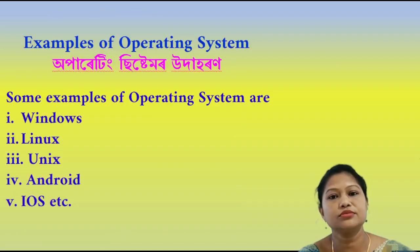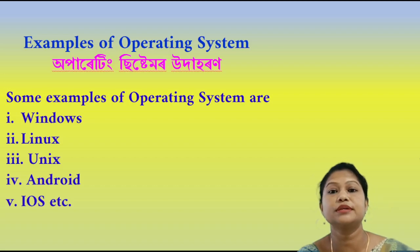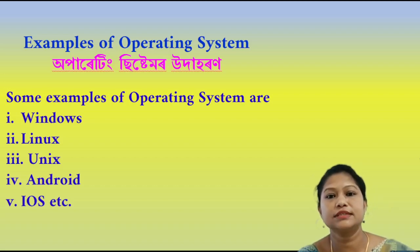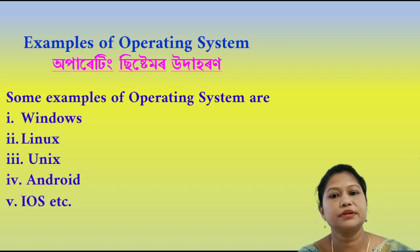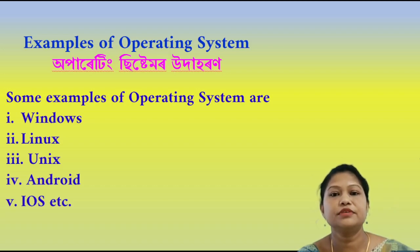Examples of operating systems include MS-DOS, which is a black and white screen, and Windows operating systems such as Windows 95, 98, Windows XP, Vista, Windows 7, 8, 10, and 11.